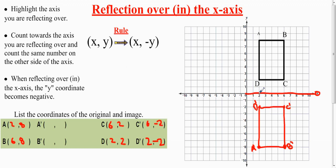A' is 2 to the right and negative 8 down. And B', finally, is 6 to the right and 8 down. 6 to the right and negative 8.